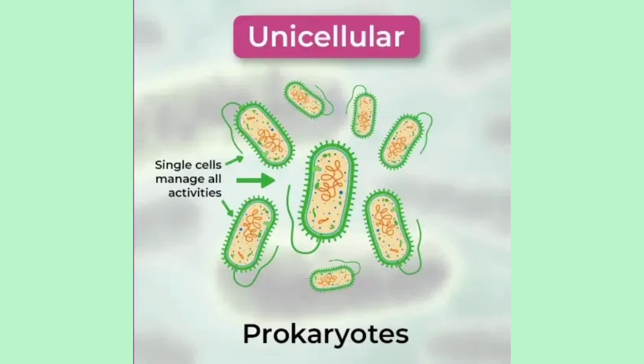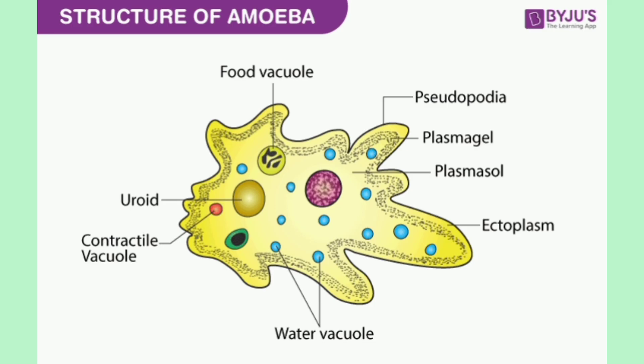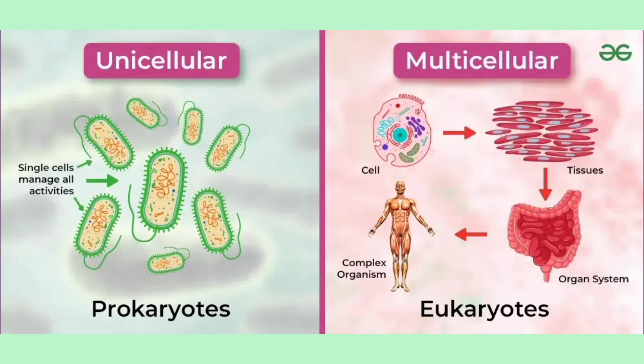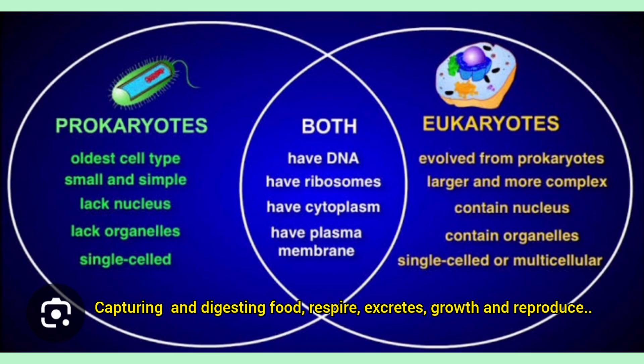The second one is unicellular organisms. Organisms made up of a single cell are called unicellular or single-celled organisms. The best example is amoeba, which is made up of a single cell. Unicellular organisms can perform all the necessary functions performed by multicellular organisms, including capturing and digesting food, respiration, excretion, growth and reproduction.